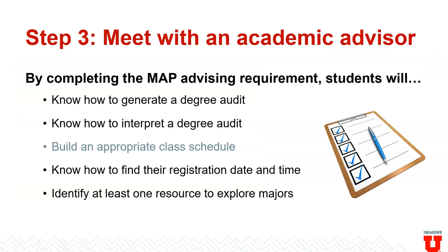Step three, meet with your academic advisor. In that milestone advising appointment, there are learning outcomes that we hope you accomplish by the time you're done with that meeting. Some of these outcomes you're actually accomplishing by completing the steps outlined in this video. Those are things like knowing how to generate a degree audit and interpret that audit, knowing how to build an appropriate class schedule, knowing how to find your registration date and time, and being able to identify at least one resource to help you explore majors.